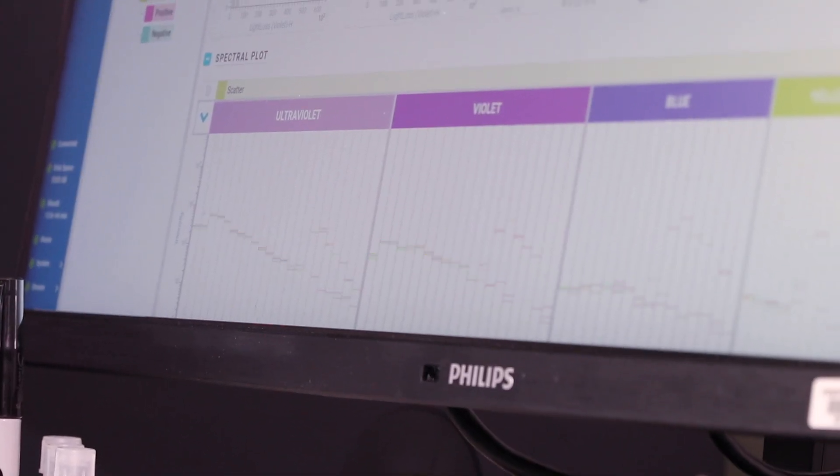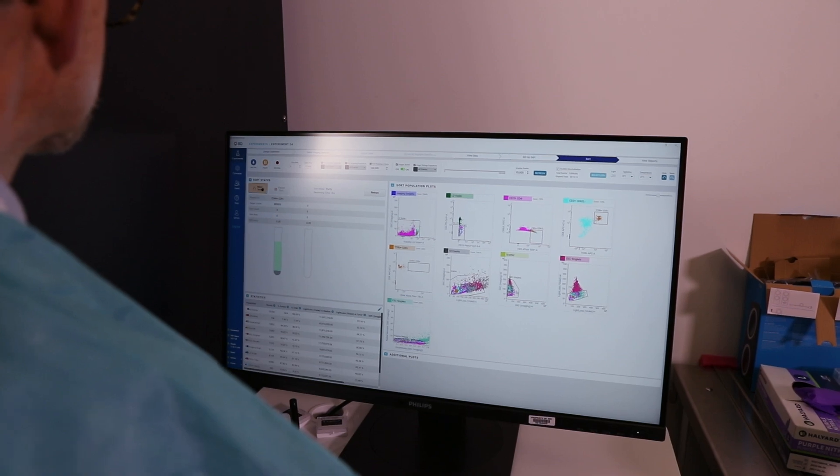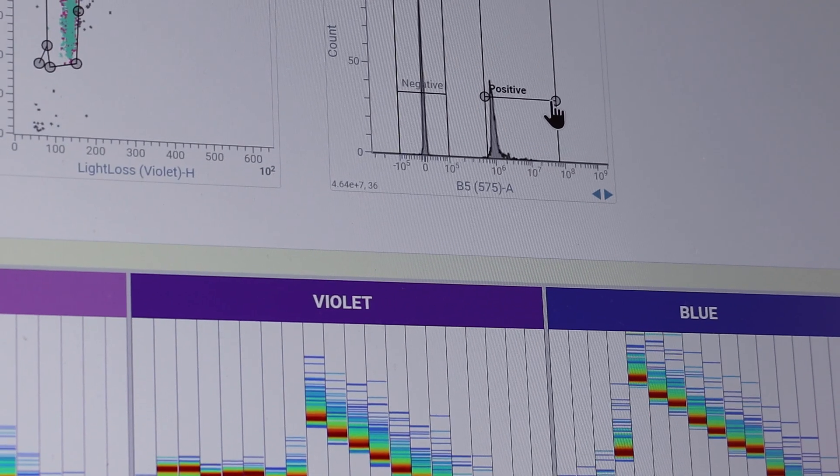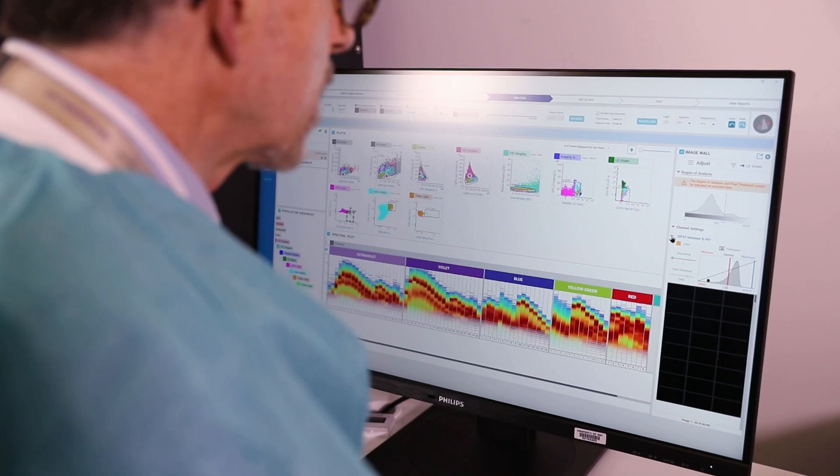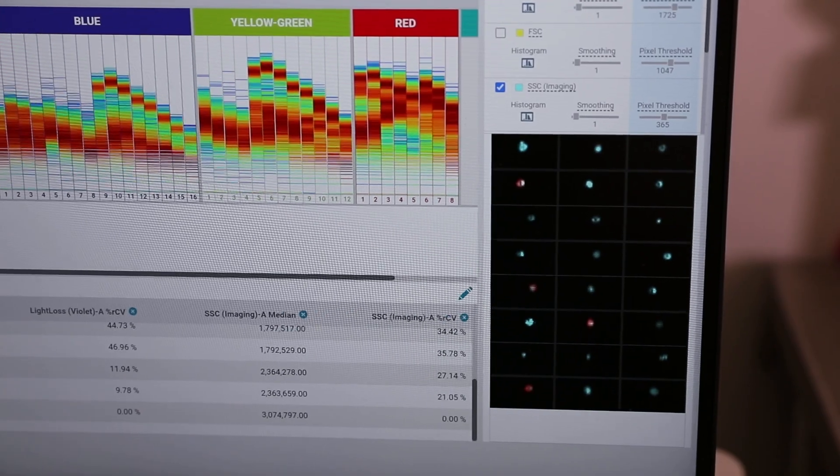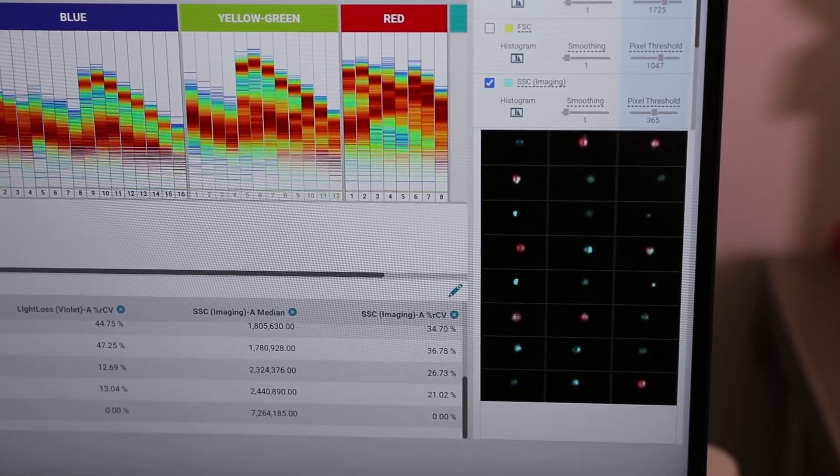Normally we look at just the light signals that come off the cells. So as the cells are interrogated by lasers, we look at physical characteristics. We can actually see what that cell is and look at the physical characteristics of the cell.